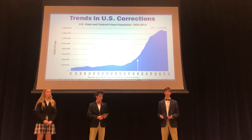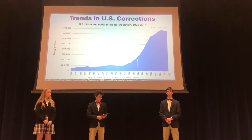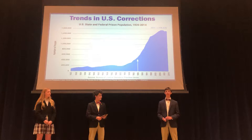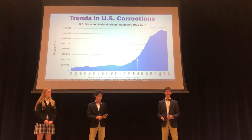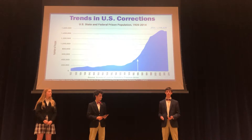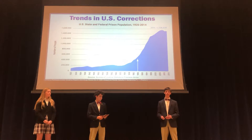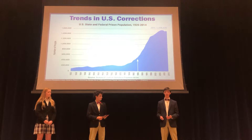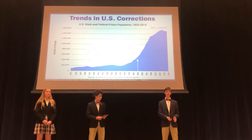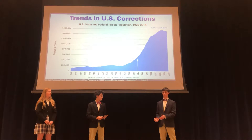For example, in 2014, 1.5 million prisoners were incarcerated into the federal prison system, while only 600,000 were released. While some prisoners do die in prison, there have been consistently more people being added into the system than being taken out of the system.